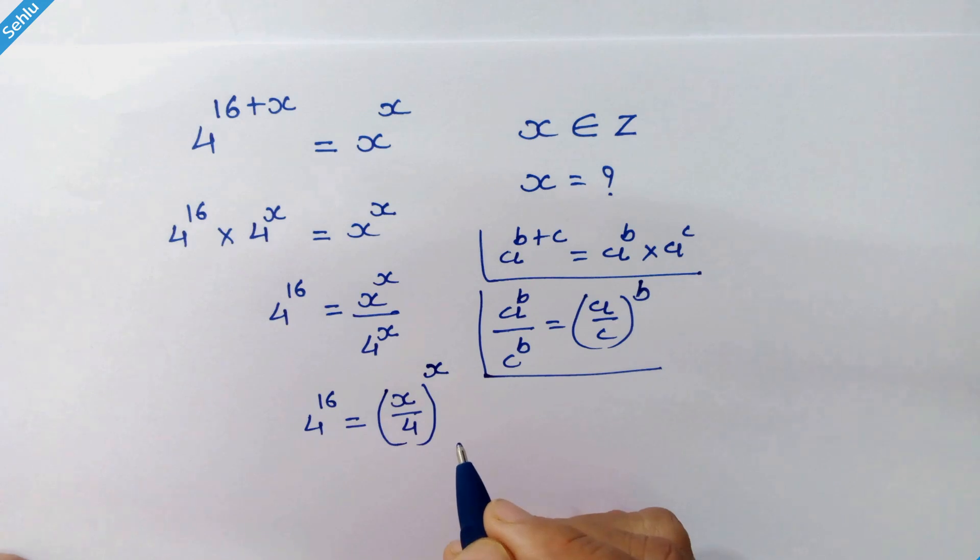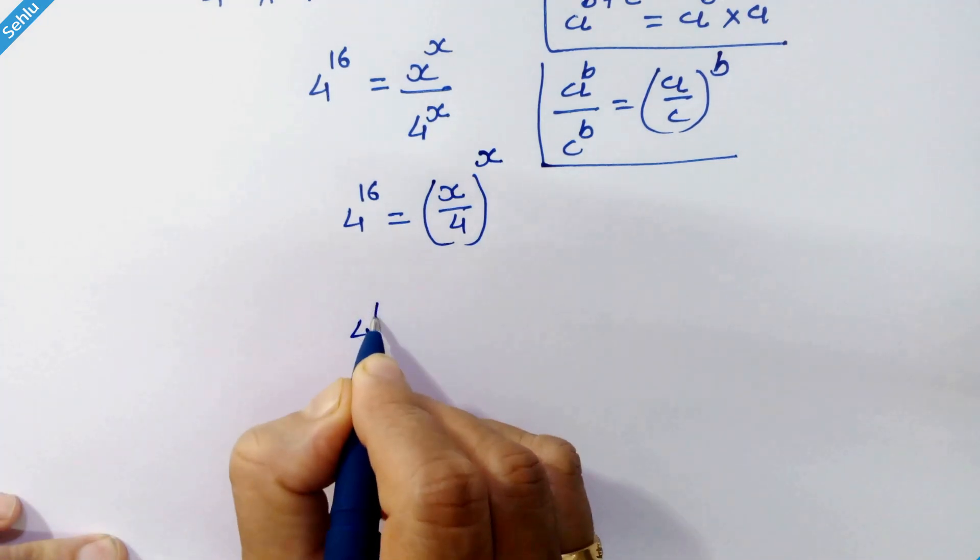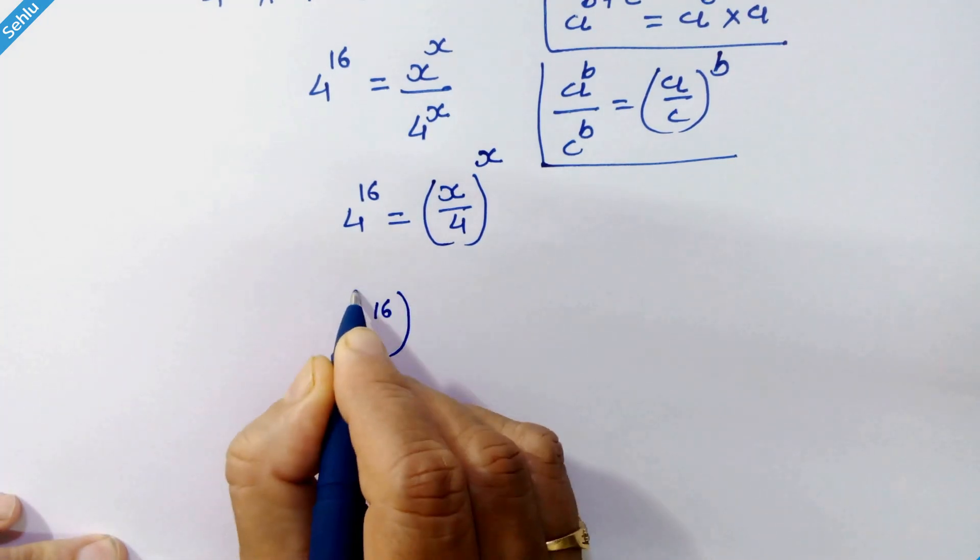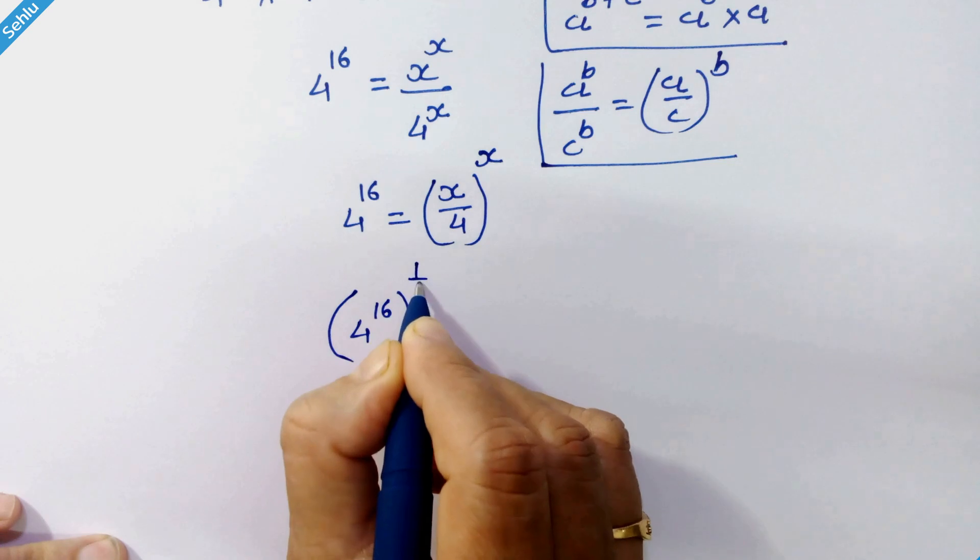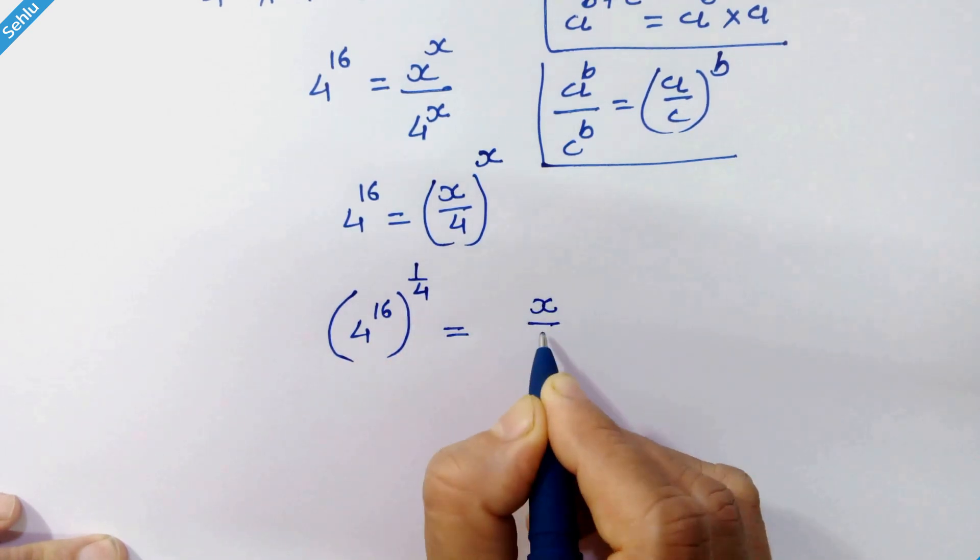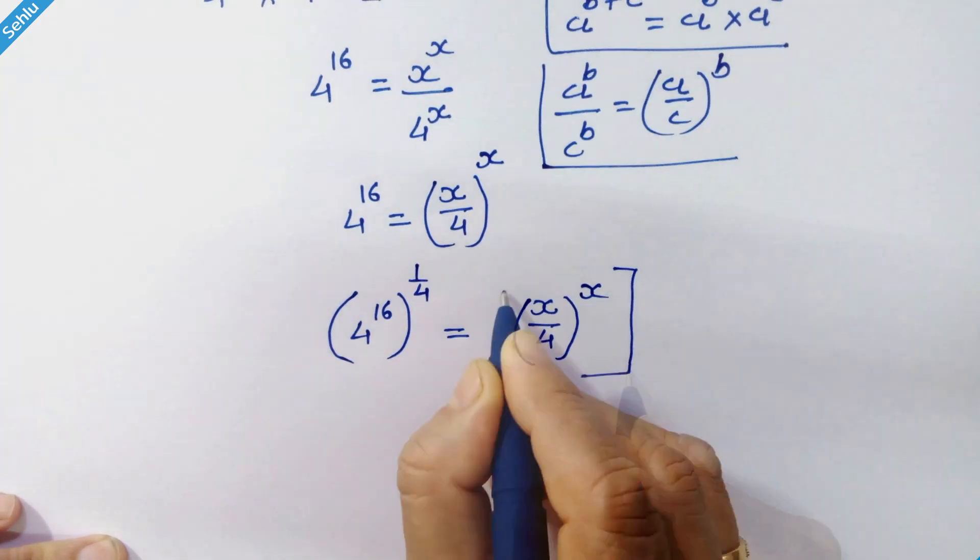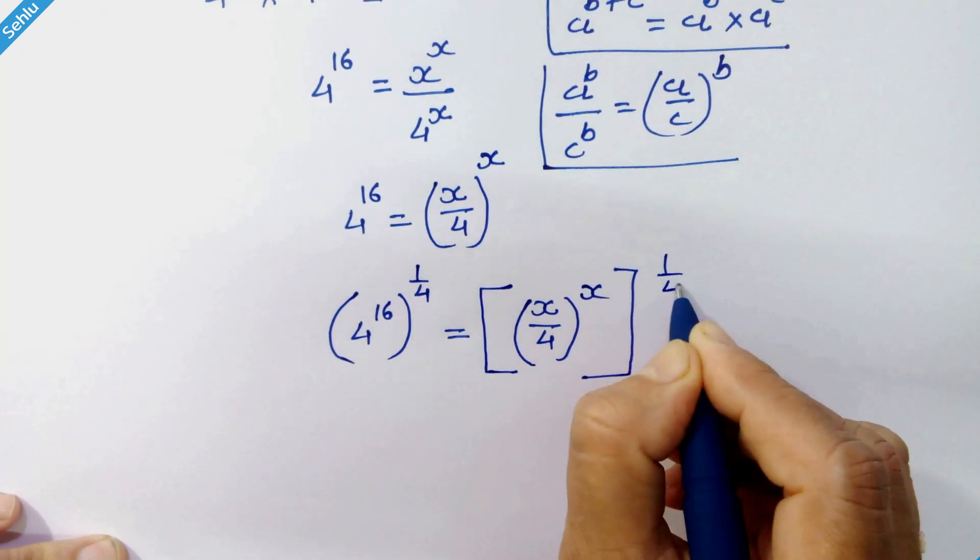In the next step, we'll raise both sides to the power of 1 over 4. So we have 4 raised to 16, whole raised to 1 over 4, equals x over 4, whole raised to x, whole raised to 1 over 4.